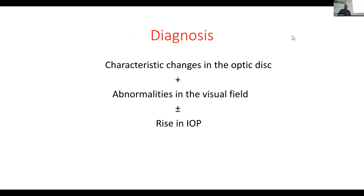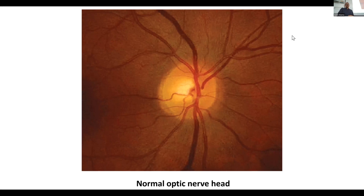How do we diagnose it? On fundus examination you do visual field examination. There may or may not be a rise of intraocular pressure. This is the normal disc. When we examine with a direct ophthalmoscope, the magnified beam is around 1.5 mm. These are the cup-disc margins, this is the disc margin, this is the artery, these are the veins, and this is the cup. The normal cup-disc ratio is around 0.3.